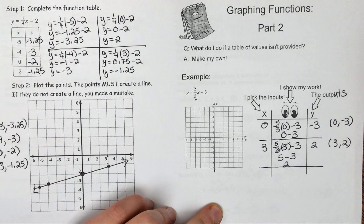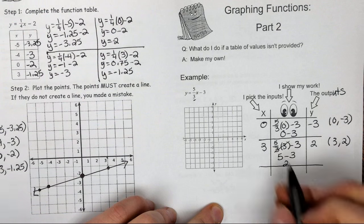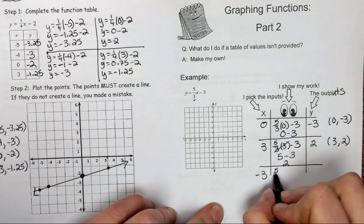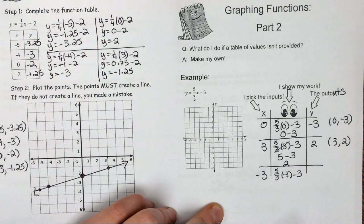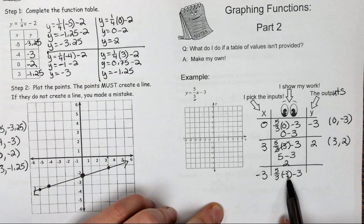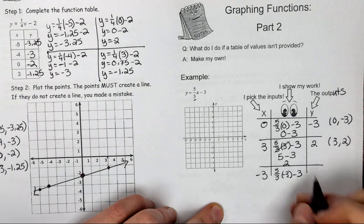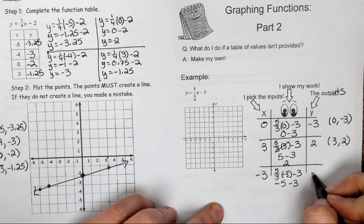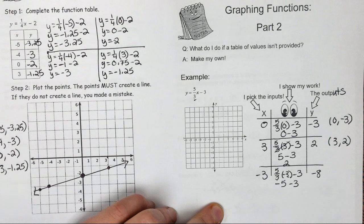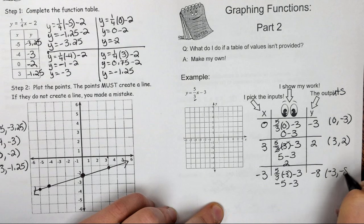Last but not least, I usually take the opposite. So this would be a negative 3. I have 5/3 times negative 3 minus 3. What happens here is the denominator cancels with the 3, but I'm left with a negative. So this is going to be negative 5 minus 3, and that's going to give me a negative 8. My ordered pair would be negative 3, negative 8.